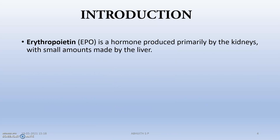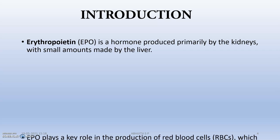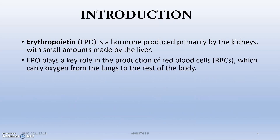Moving to the first part: erythropoietin. Erythropoietin is a hormone produced primarily by the kidneys, with small amounts made by the liver. Erythropoietin plays a key role in the production of red blood cells, which carry oxygen from the lungs to the rest of the body.